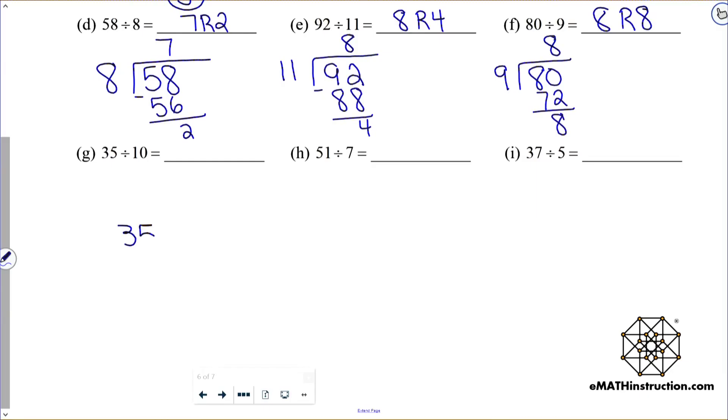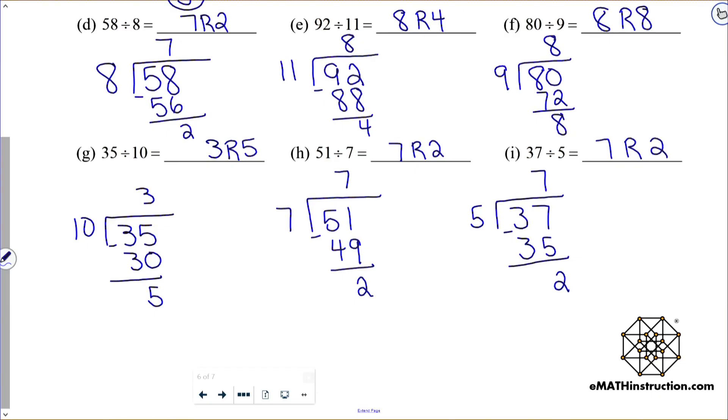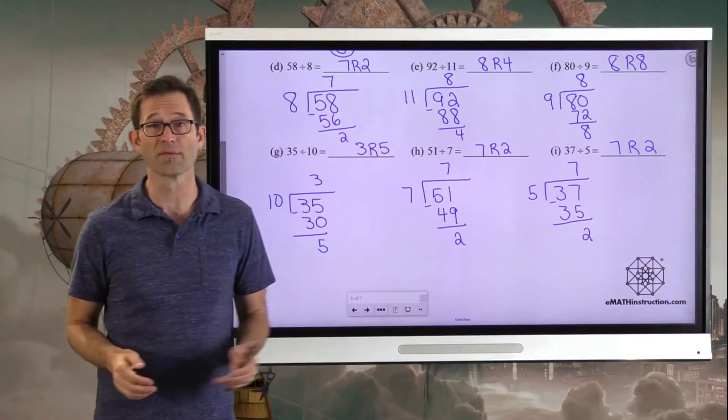Let's finish off the last three by raising up the board. All right, so 35 divided by 10. Well, 10 can go into 35 three times. That gives us a 30. And when we subtract, we have a remainder of five. So that's three R5. 51 divided by seven. Well, seven times seven, that's 49. So that's pretty close. And when we subtract, we have a remainder of two. So 51 divided by seven is seven with a remainder of two. And finally, 37 divided by five. Well, five can go into 37 seven times. Gives us 35 and also gives us a remainder of two. So same answers on those last two, seven R2 and seven R2. Sounds like a character out of Star Wars at this point.